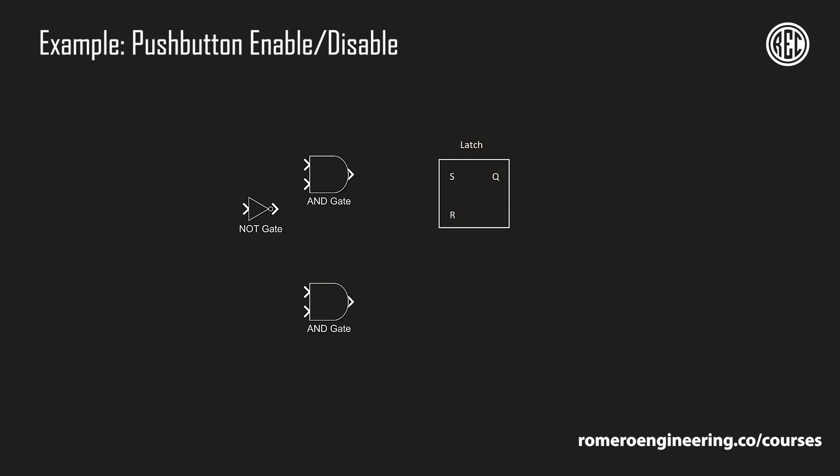The input to our logic scheme is going to be the push button of the relay — a physical push button on the front panel. The output is going to be the status of the latch itself, which we'll use to control when we enable or disable certain functions within the relay. We'll go over the logic first, then program it into an SEL 421 relay.